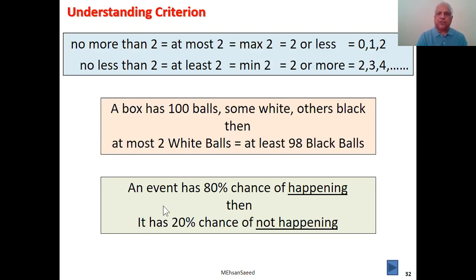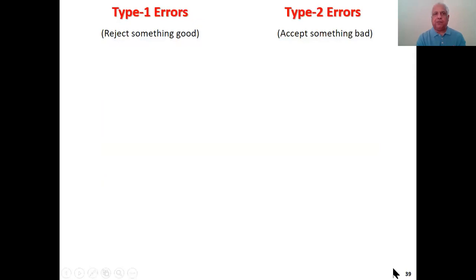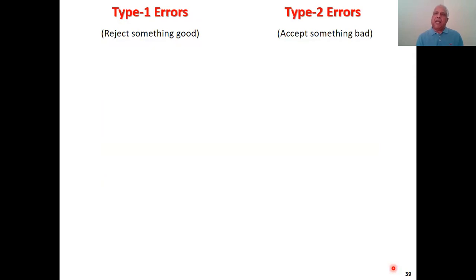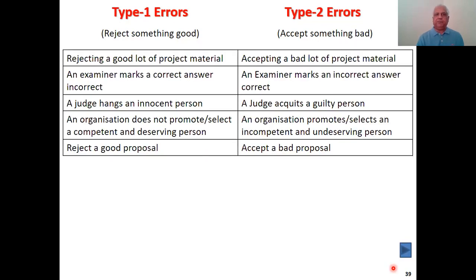One more concept to clear up: type 1 and type 2 errors. Type 1 error is rejecting something good, and type 2 error is accepting something bad. These errors have application in all fields of life. For instance, rejecting a good lot of project material is a type 1 error, while accepting a bad lot of project material is a type 2 error.